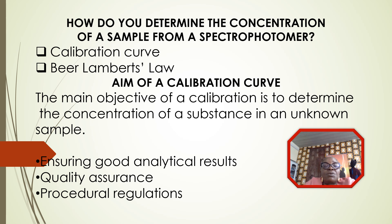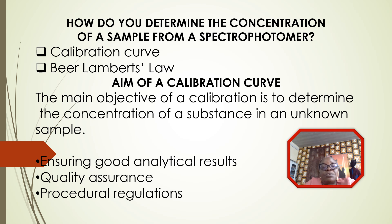How do we determine the concentration of a sample from a spectrophotometer? We use what we call the calibration curve, or we can also use the Beer-Lambert law. The main objective of a calibration is to determine the concentration of a substance in an unknown sample. Calibration is also important to ensure good analytical results, for quality assurance, and for procedural regulations.